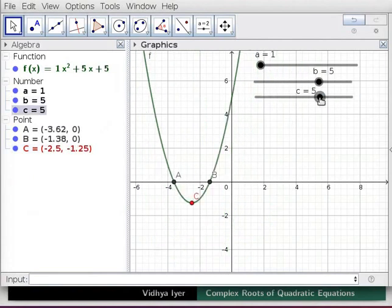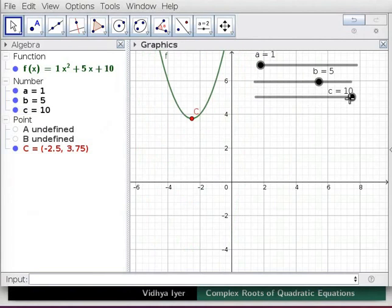slider c at 10. The equation f(x) = 1x² + 5x + 10 appears in algebra view.